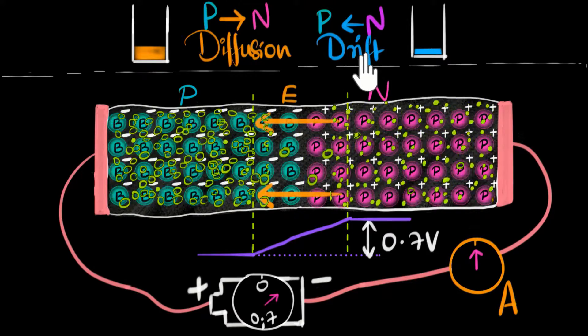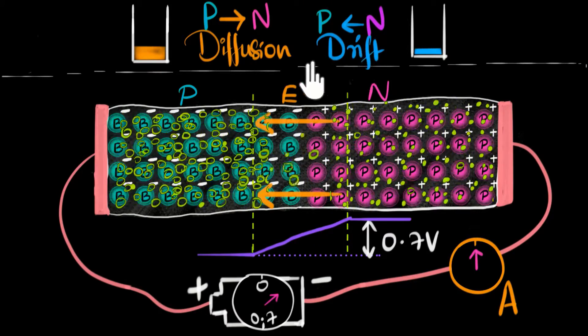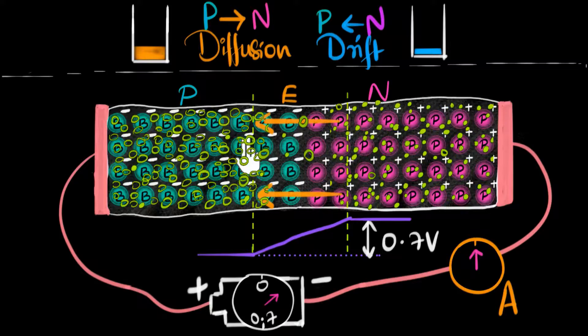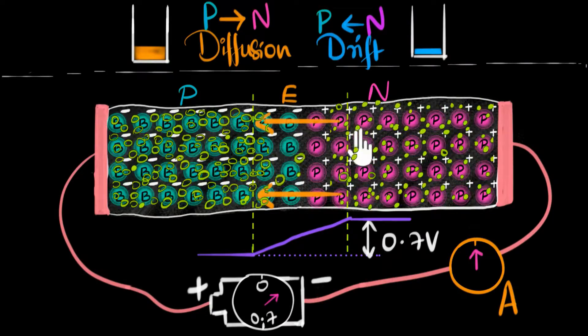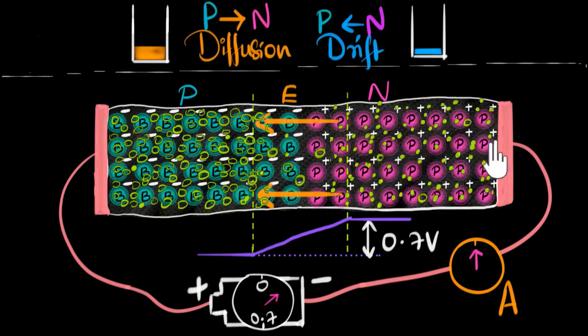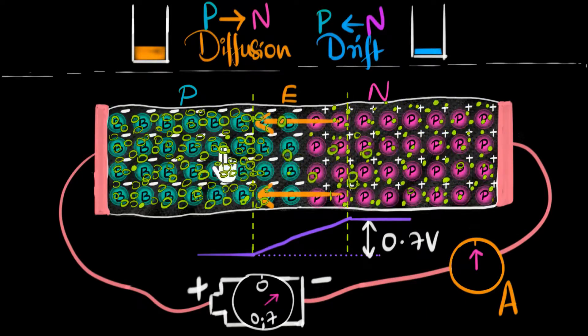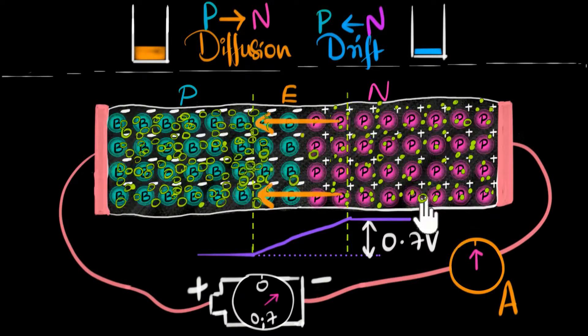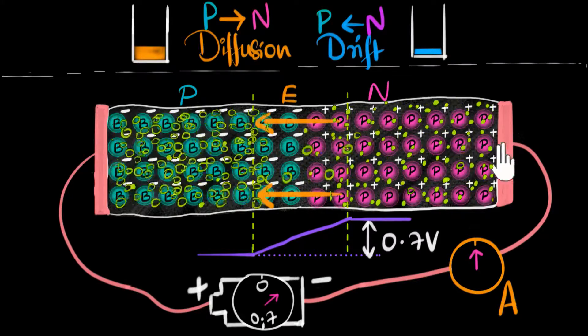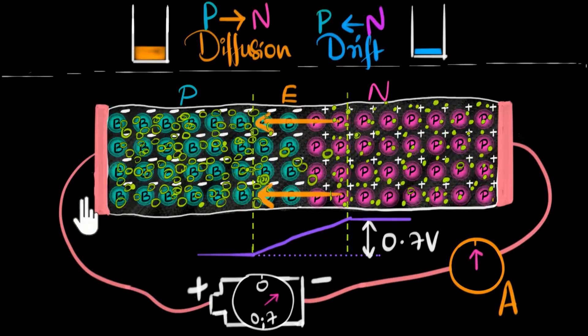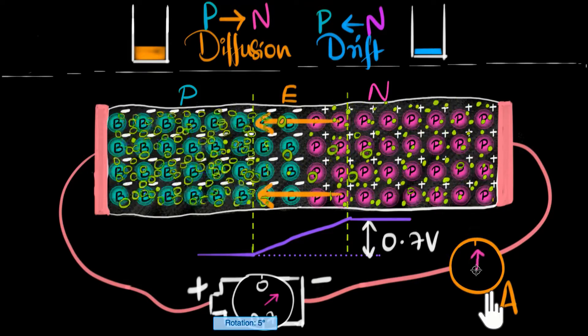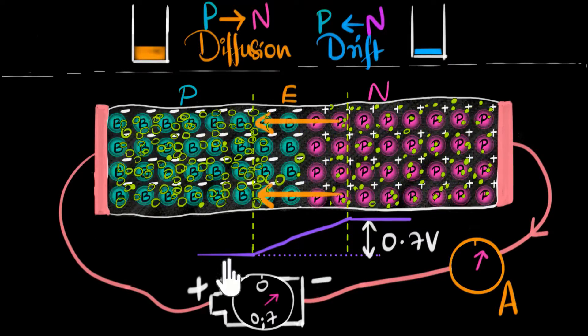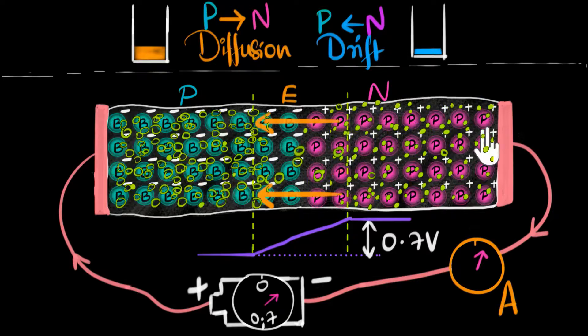If you look over here, the diffusion current will go up a little bit because you're putting a little bit of voltage. Notice as a result, diffusion is no longer equal to drift, and because of that, there will be a net current flowing. Since diffusion is from P to N and that has increased, there will be a total current now going from P to N.